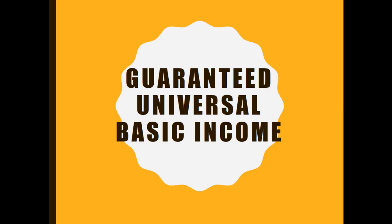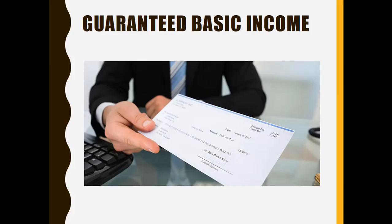This last idea is also mentioned in your textbook — it's something called a guaranteed universal basic income. The idea is basically: if robots are going to take everybody's jobs, fine. But as a result of that, if you're born and you're living, you're going to get a check. Exactly what that check would be would have to be decided.